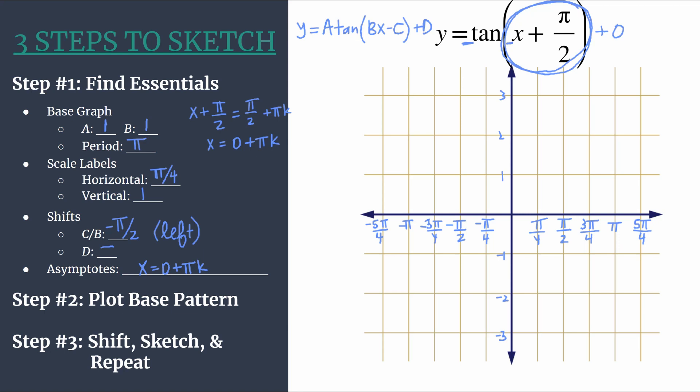All right, so we've organized all our information. We've analyzed everything that we need to. We're ready for step two, which is to lightly plot the base pattern. And so that's using the information up here. We know our base pattern for tangent when it's not reflected is zero point, asymptote point. So let's lightly plot this or I'll use a light blue because these are temporary points. We will shift them in just a moment. So we have our zero that starts at the origin.